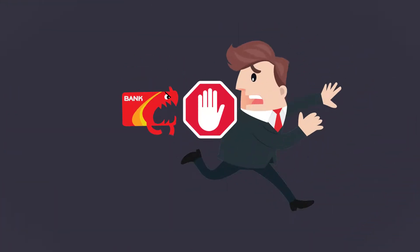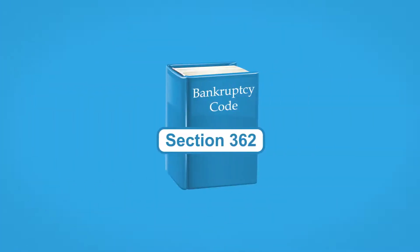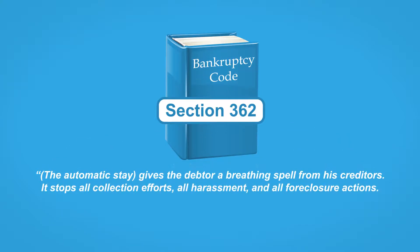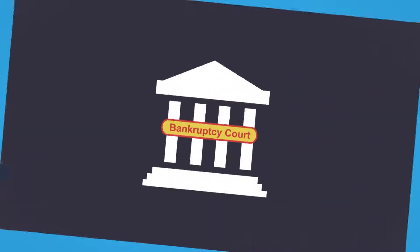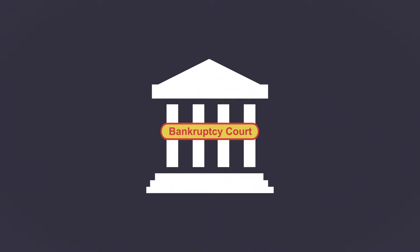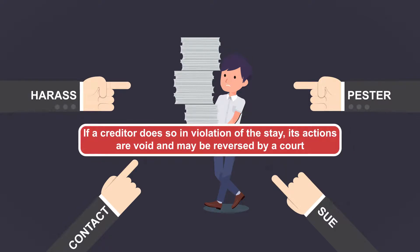The stay prevents creditors from going after the party that's filed for bankruptcy, even if that creditor received no notice of the filing. When Congress enacted Section 362 of the Bankruptcy Code in 1978, its legislative intent behind the Automatic Stay was presented as follows: the Automatic Stay gives the debtor a breathing spell from his creditors. It stops all collection efforts, all harassment, and all foreclosure actions. It permits the debtor to attempt a repayment or reorganization plan, or simply to be relieved of the financial pressures that drove him into bankruptcy. The bankruptcy court must have an opportunity to sort matters out and begin an orderly administration of the estate. Creditors cannot harass, contact, sue, or generally pester the debtor. If the creditor does so in violation of the stay, its actions are void and may be reversed by a court.